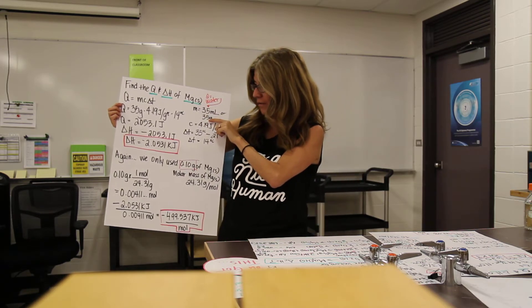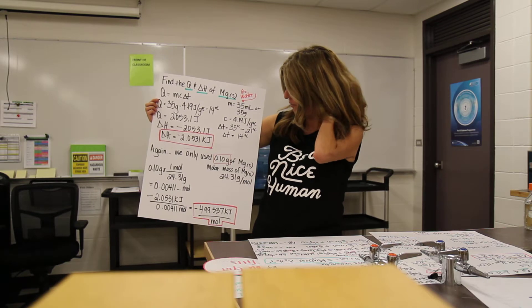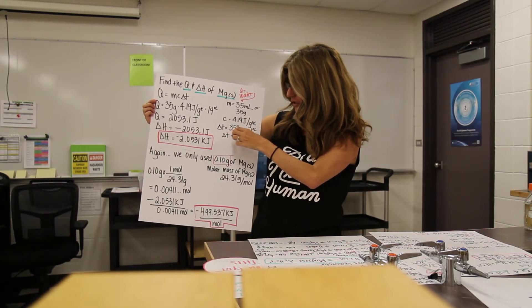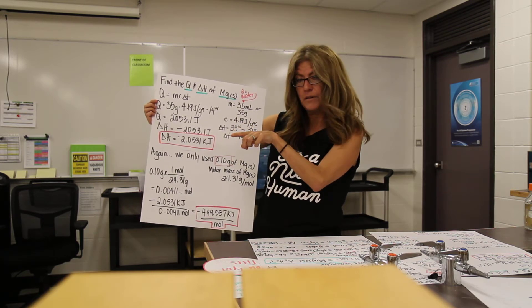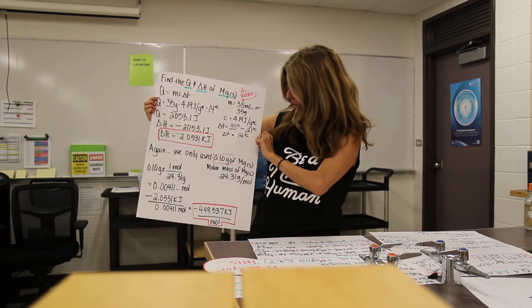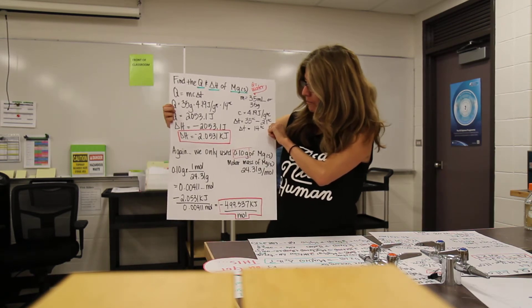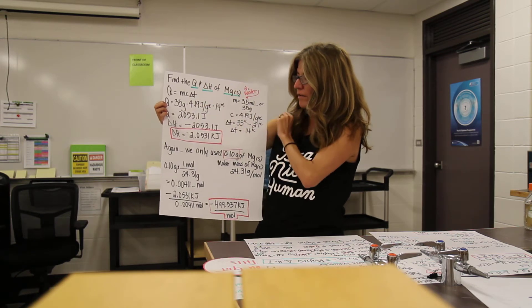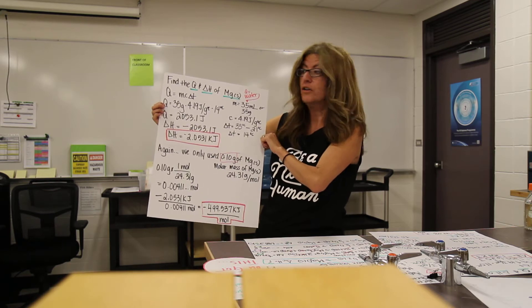So we have 35 milliliters, or 35 grams. Our specific heat capacity is 4.19 joules per gram times Celsius. Our change in temperature went 21 degrees up to 35 degrees. So final minus initial, 35 minus 21, is going to give us a change in temperature of 14 degrees. So we're going to put in our 35 grams, 4.19, 14 degrees. We multiply that all, and we get 2,053.1 joules.